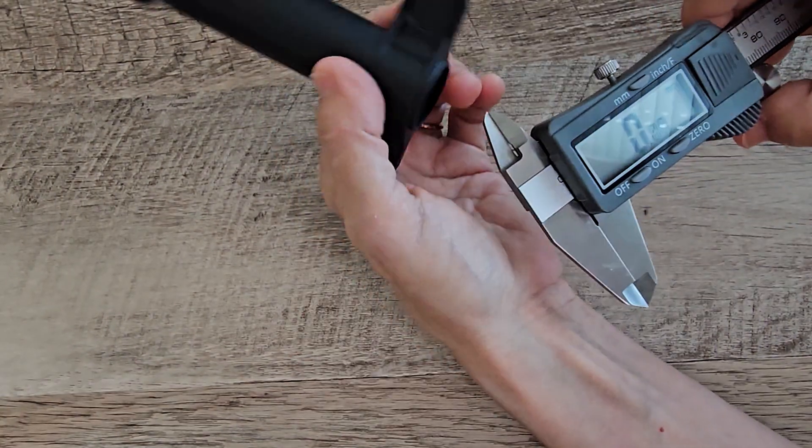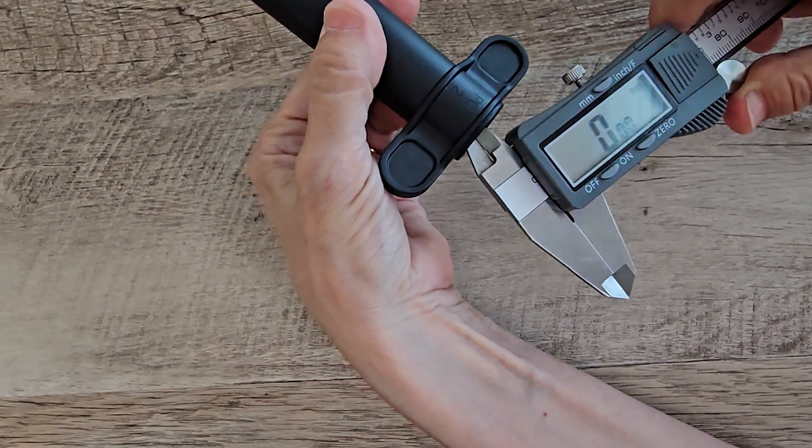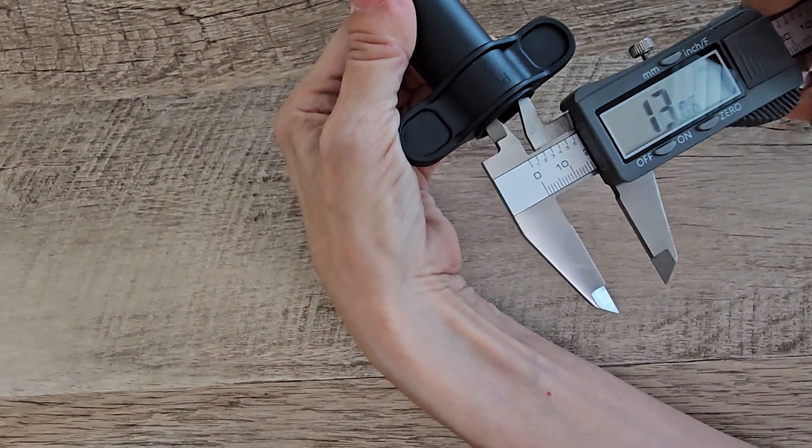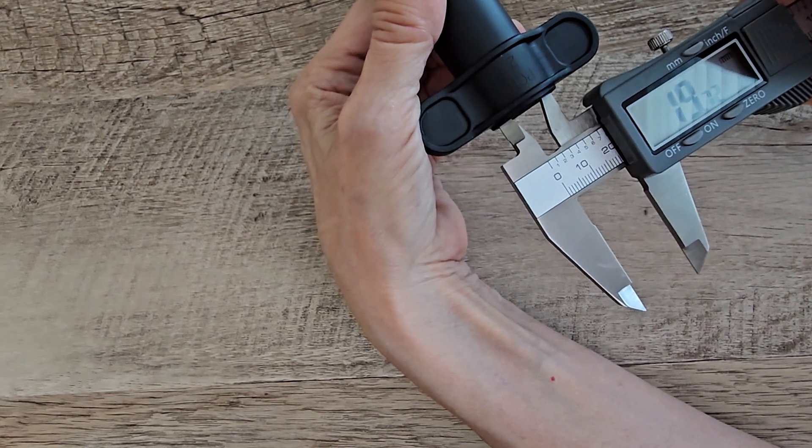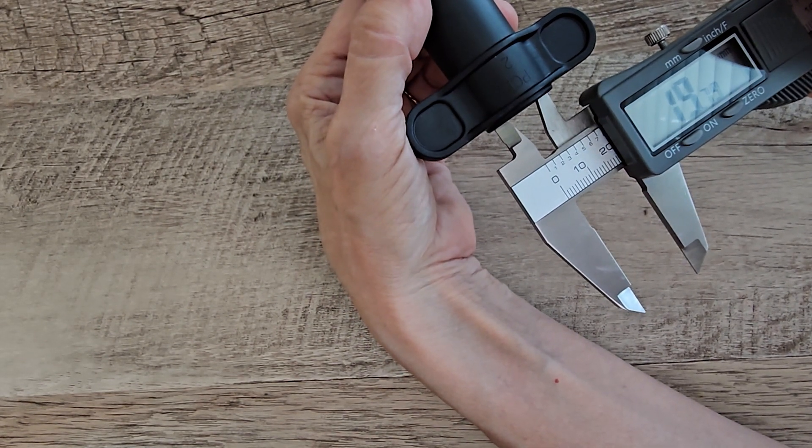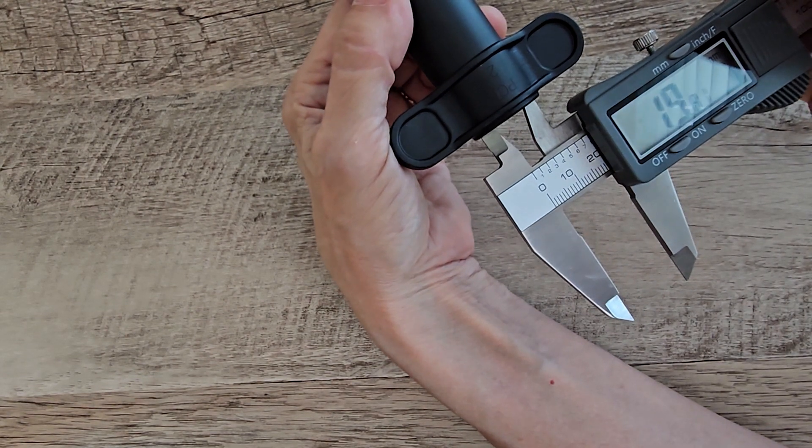An example of an inside measurement would be using the smaller side. And you just open it up until both sides touch. Of course, you have to make sure your item is straight. If it's cattywampus, you're going to get the wrong measurement.